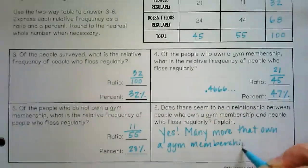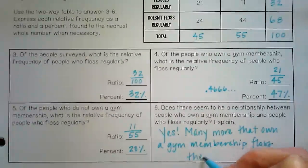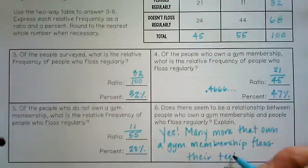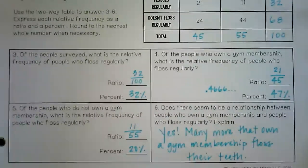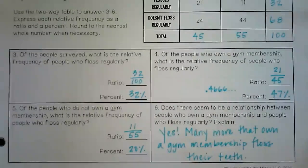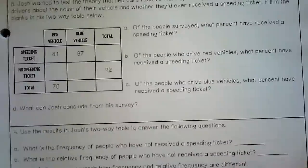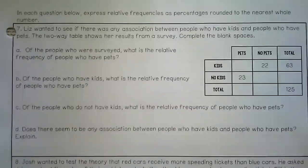There could be many reasons why, but in general someone who owns a gym membership is someone who cares about their body, and someone who cares about their body would also care about their dental health. So the relationship makes sense. Now moving on to the next chart to complete.